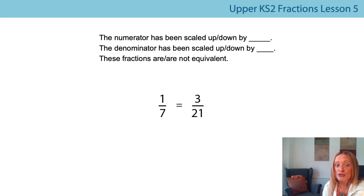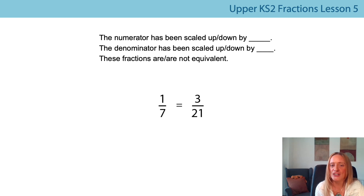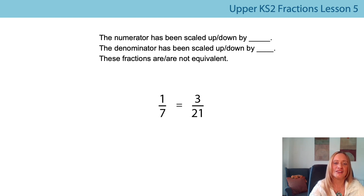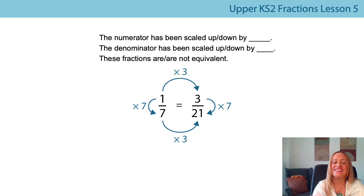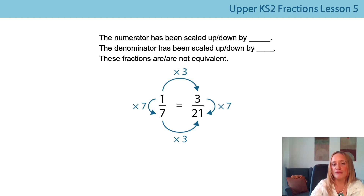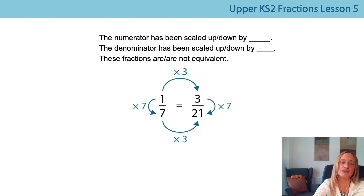Have a look at this one — you might want to pause. I'd like you to find the vertical and horizontal scale factors between the numerator and the denominator. Use the stem sentences and tell me if these are equivalent and why. Did you find they were equivalent? Yes — they have the same scale factor of seven vertically, so the numerator can be scaled up by seven and the denominator scaled down by seven. And horizontally, they were both scaled by a factor of three — the numerators have been multiplied by three and the denominators have been multiplied by three. So we had equivalent fractions there, and the generalisation about equivalence being preserved has been proved because the scale factors are the same.